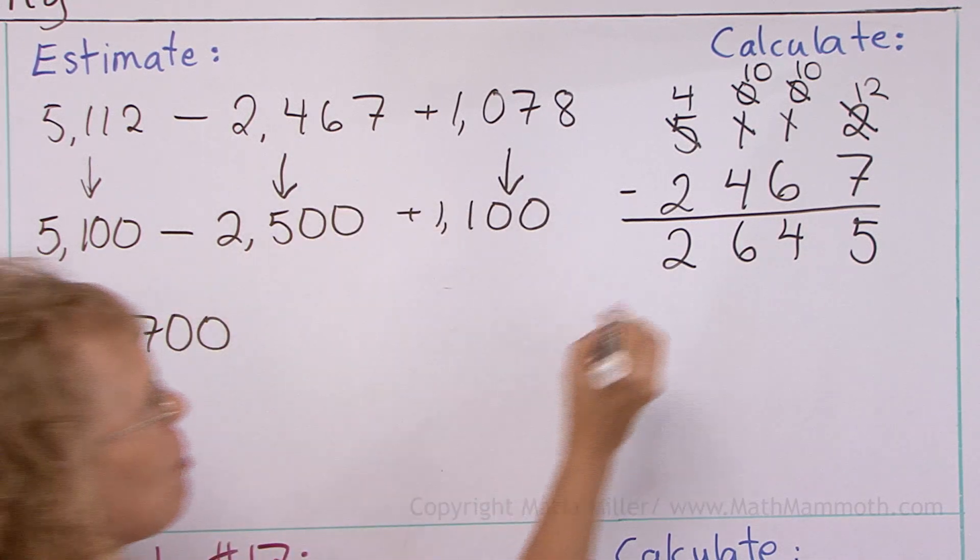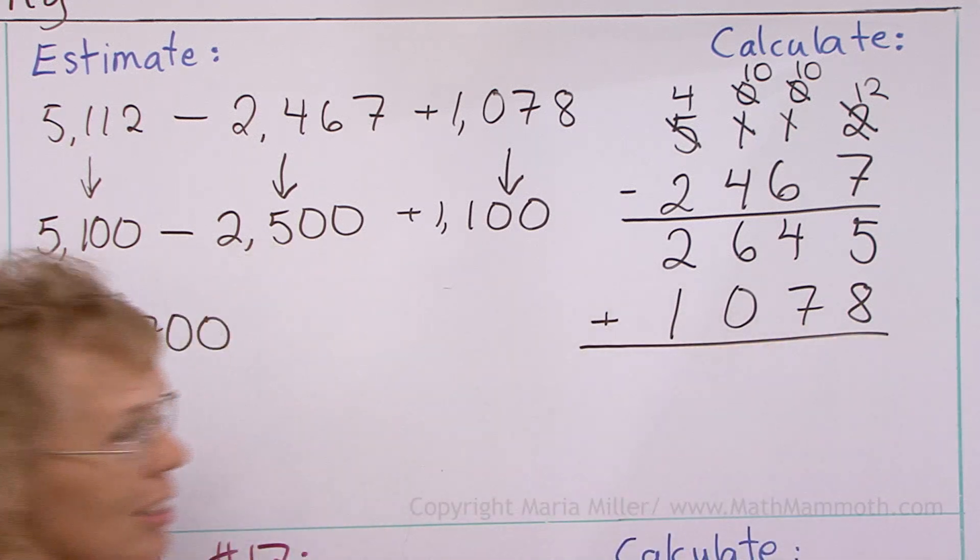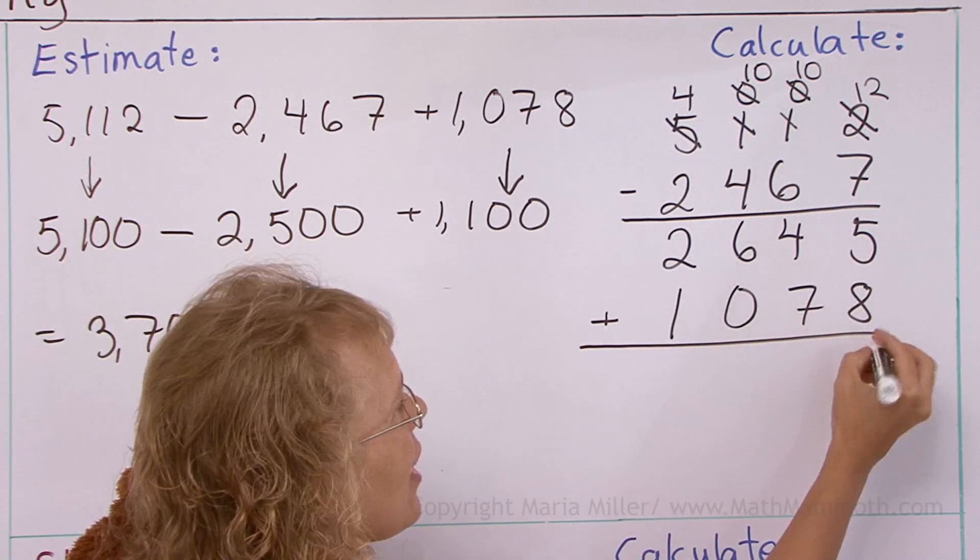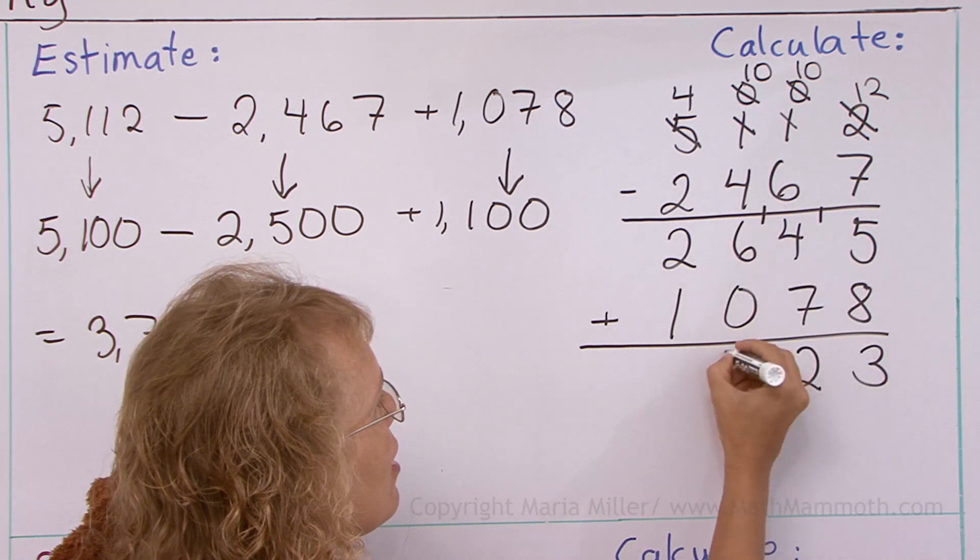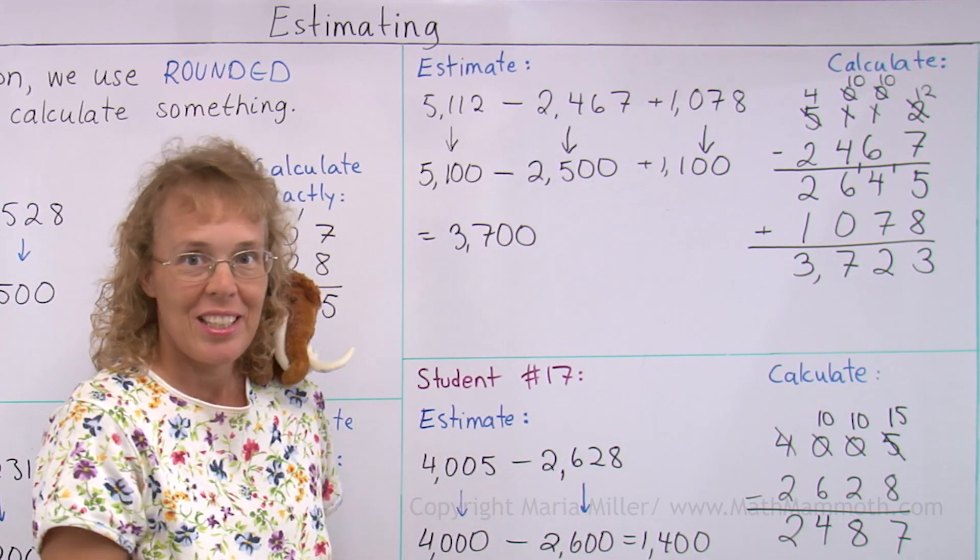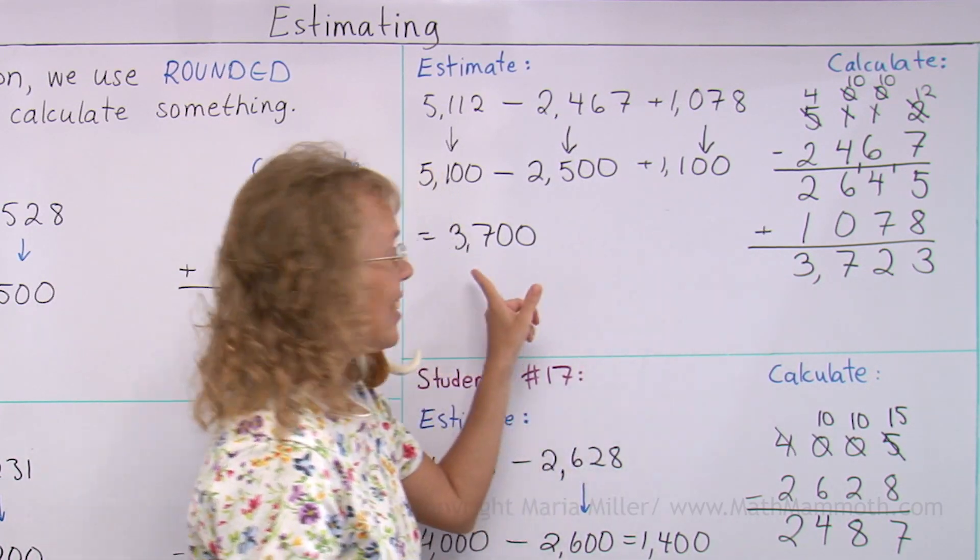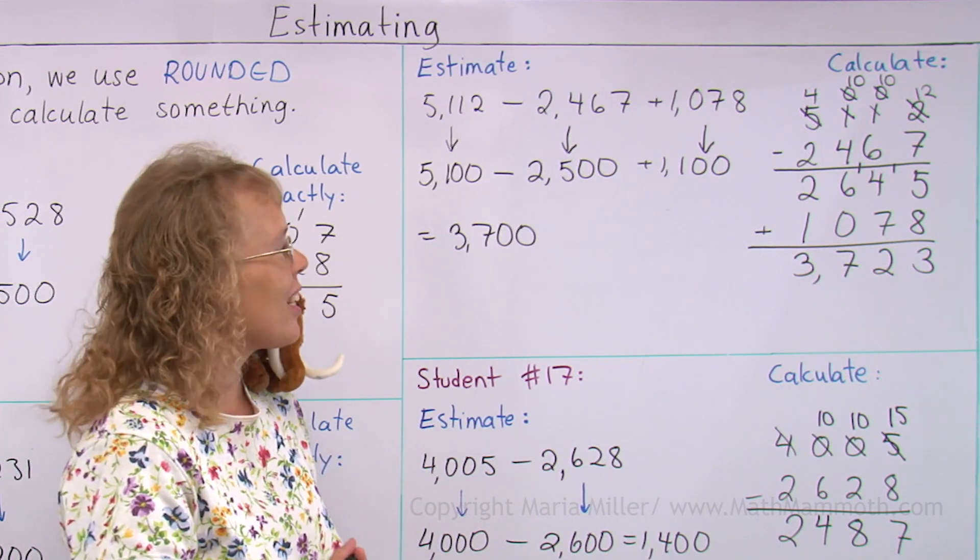And then I add that number. I'm just going to write it right here under it. Like that. And then add 5 plus 8, 13, and here's 12, 7, and 3. Yes, it is close to the estimation, so it looks like all should be well and I got the right answer.